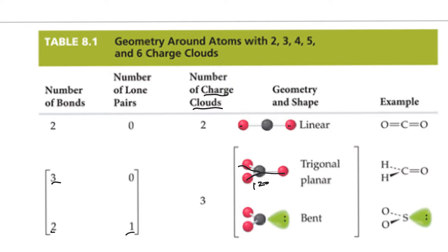If you have three domains but two are bonds and one is a non-bonding lone pair, sulfur dioxide is an example of that. The lone pair shoves the bonds away, so you end up with a bent shape. Normally this would be 120 degrees, but the lone pair cloud is broader than a bond — since only one nucleus holds those electrons, they spread wider. This shoves the bonding pairs together, so the bond angle is less than 120 degrees, while the lone pair-to-bond angle is greater than 120 degrees.